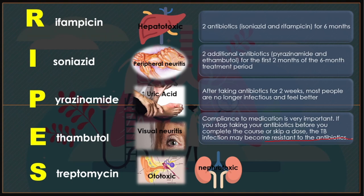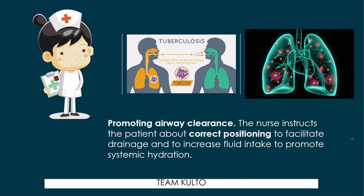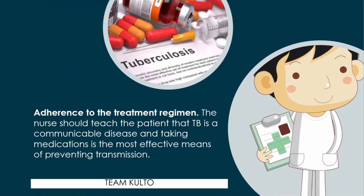Now, what are your nursing interventions? As nurses, we need to promote airway clearance. The nurse instructs the patient about correct positioning to facilitate drainage and to increase fluid intake to promote systemic hydration. You as a nurse should also encourage adherence to the treatment regimen — teach the patient that TB is a communicable disease and that taking medications is the most effective means of preventing transmission.